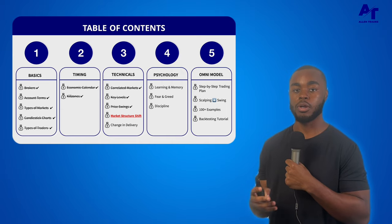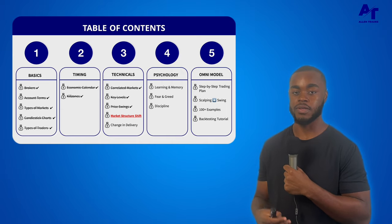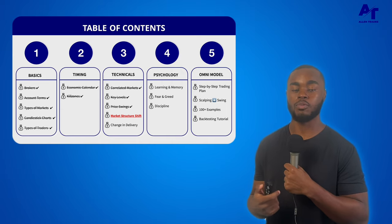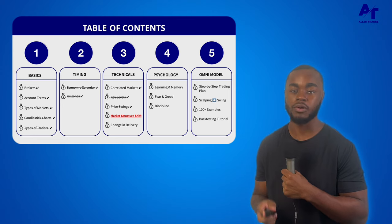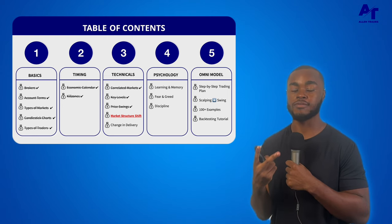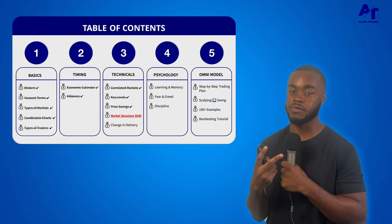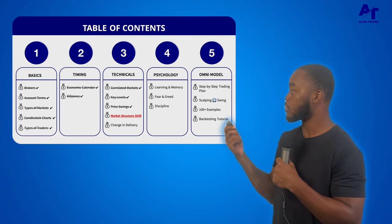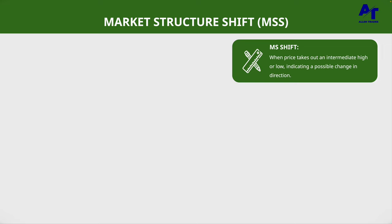Now we are going to talk about market structure shifts. This video is going to be one of the quicker ones — it's pretty straightforward. There are only two different types of market structure shifts. So what is a market structure shift? It's when price takes out an intermediate high or low, indicating a possible change in direction.